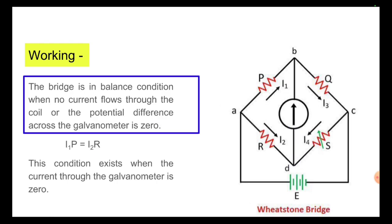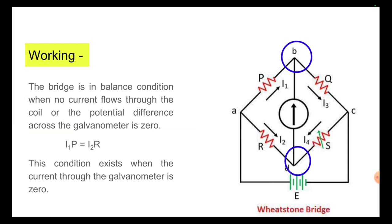Then coming to the working, the bridge is in balanced condition when no current flows through the coil or the potential difference across the galvanometer is zero. I1P is equal to I2R.